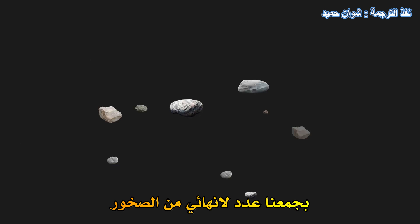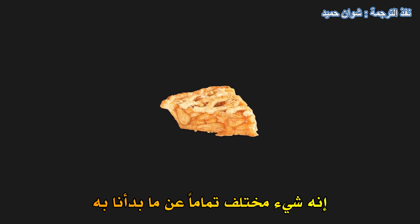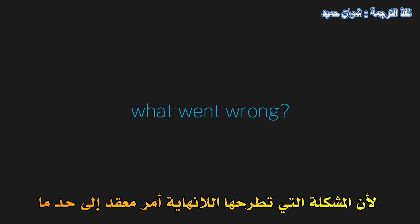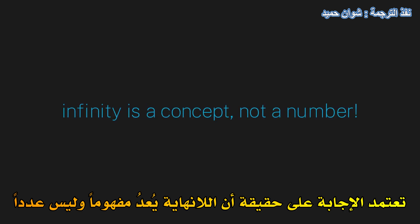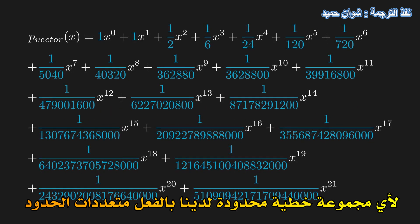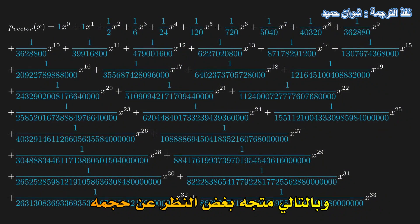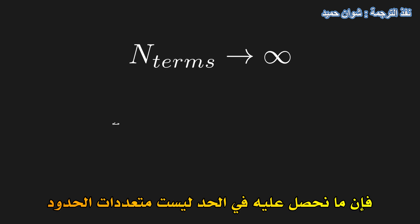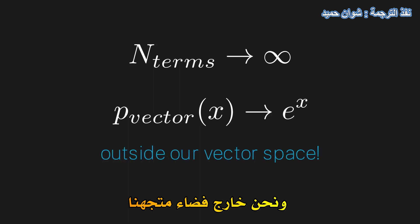Just think about how crazy that is. Imagine we were collecting infinitely many rocks, always adding more rocks, and then suddenly at the end of it, we get a slice of apple pie — something completely different than what we started with. So what actually went wrong? The problem that infinity introduces is actually a bit subtle. The answer boils down to the fact that infinity is a concept, not a number. For any finite linear combination, we do indeed have a polynomial and therefore a vector, no matter how big it is. But once we let the number of terms approach the idea of infinity, what we get in the limit is not a polynomial, and we are outside our vector space.